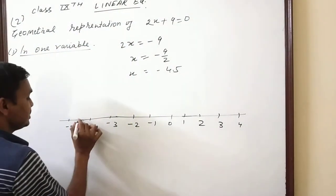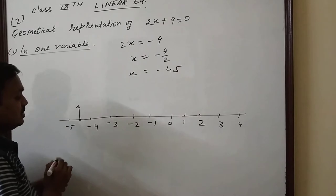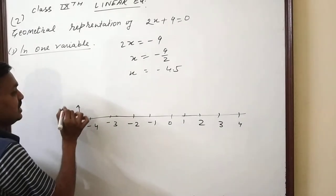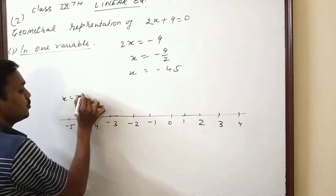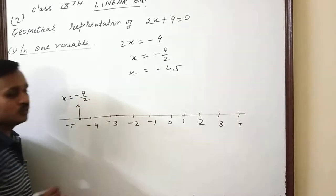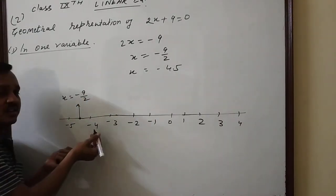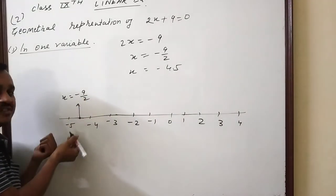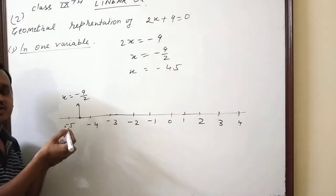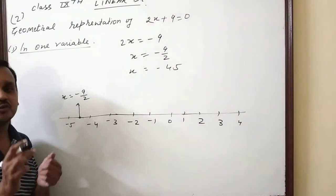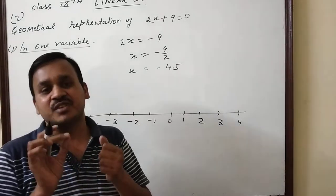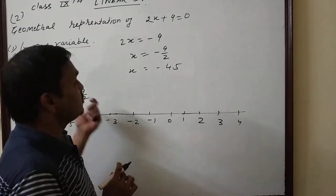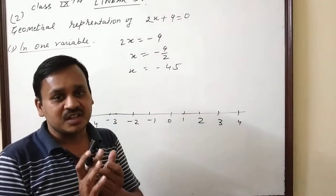This means -4.5, so on the number line x equals -9/2. This is a one variable equation. The solution of this is for one variable.